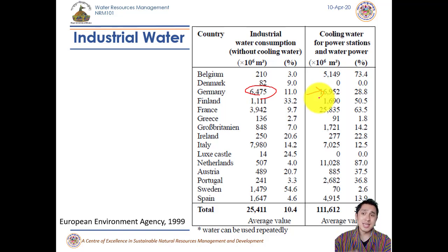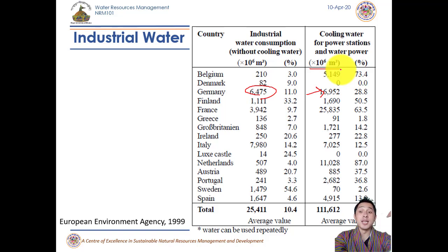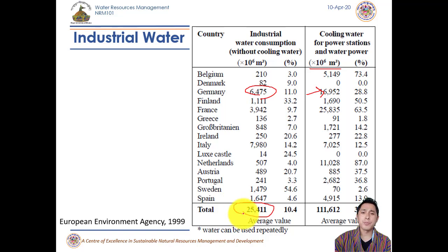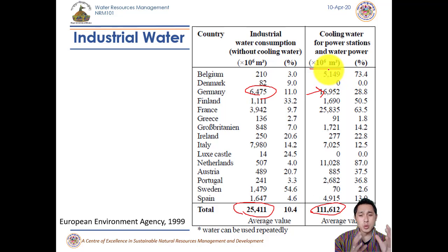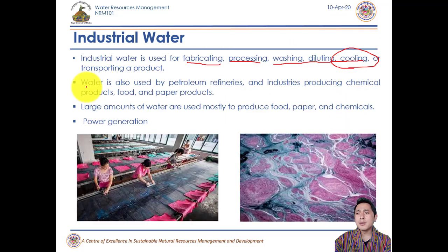This illustrates how the amount of water used as a cooling agent is really high. Globally, across developed countries, around 25,411 units are used by machines without water as a cooling agent, but with water as a cooling agent it reaches around 111,612 units. Cooling purposes alone account for an enormous proportion of industrial water consumption.